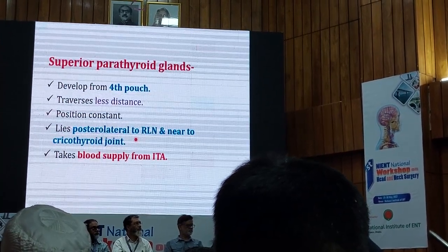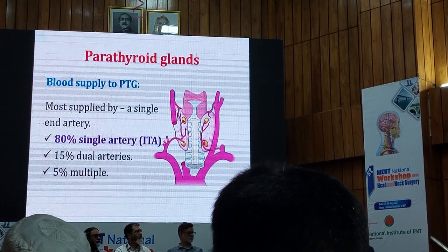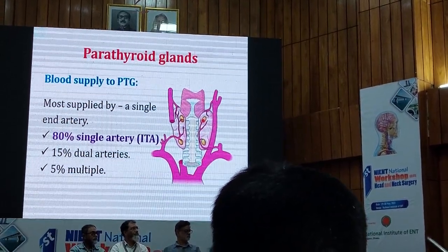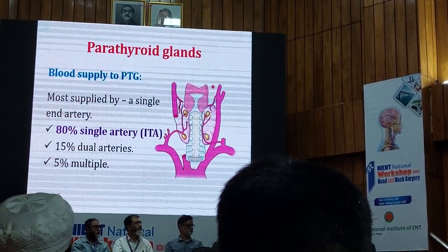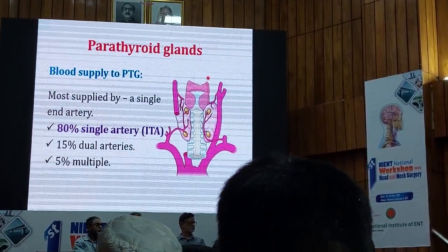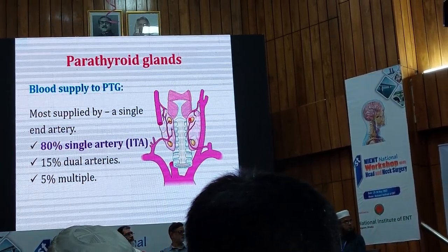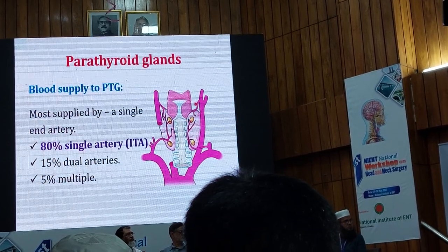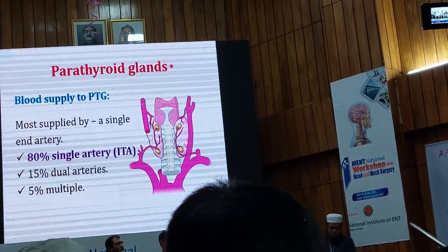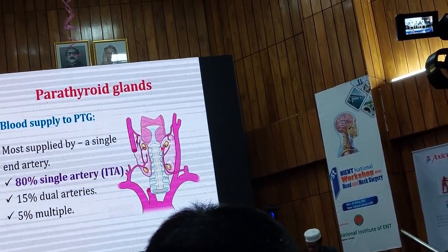Here is the superior parathyroid and the inferior parathyroid. The position of the superior parathyroid is constant because it arises from the fourth pharyngeal pouch and has to travel less distance, so its position is constant. In the case of the inferior parathyroid, it arises from the third pharyngeal pouch, so it has to traverse more distance and may lose its position.